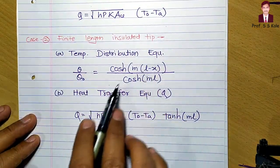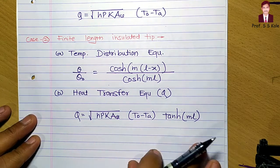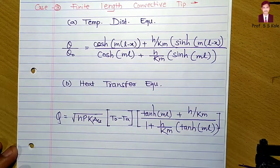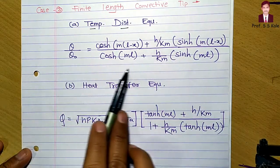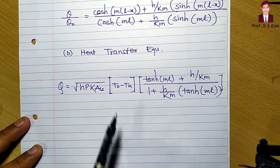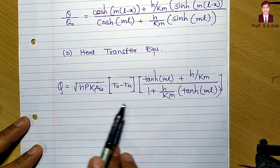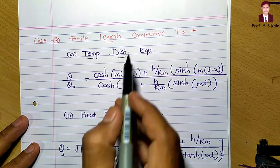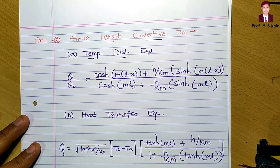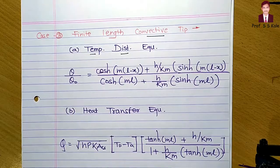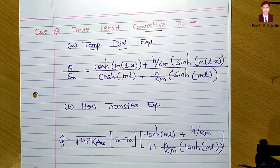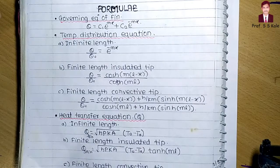For the third case — finite length with convective tip — both the temperature distribution formula and the heat transfer equation are more complicated compared to the other two types. You must remember the formulas for infinite long fin and finite length with insulated tip in order to solve problems.